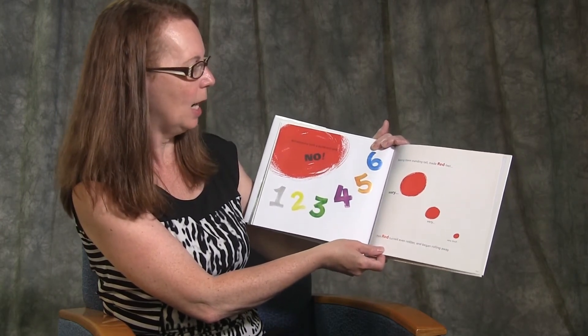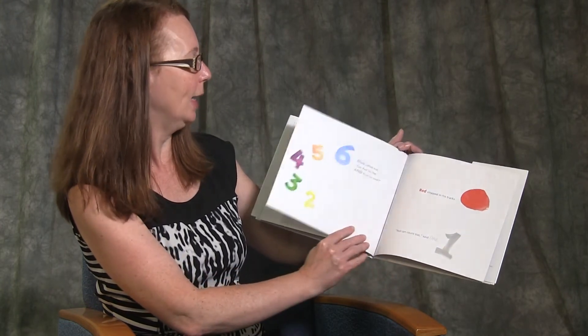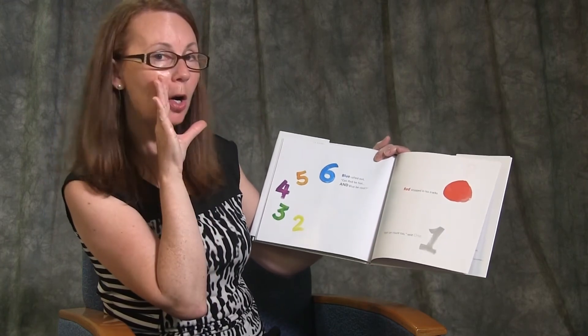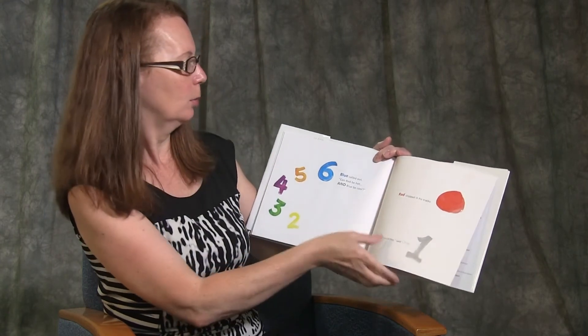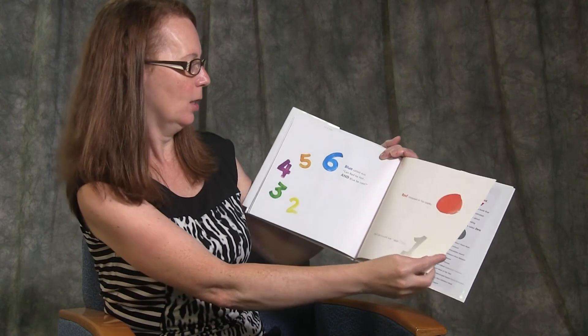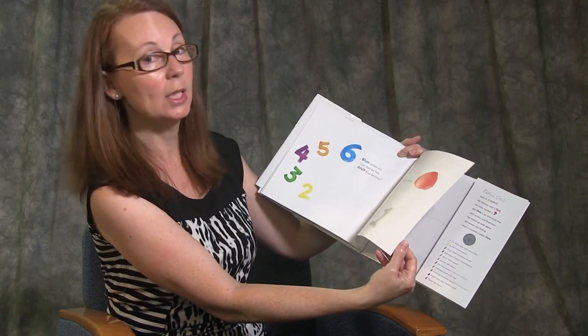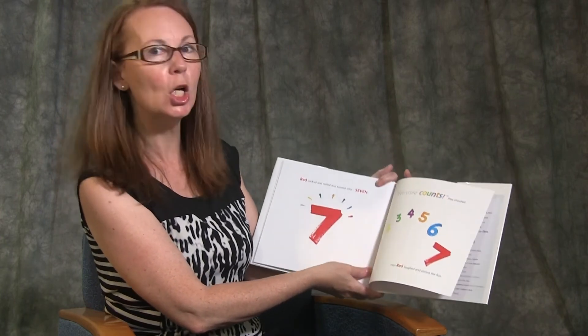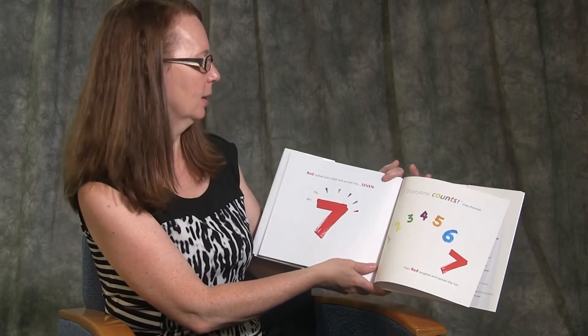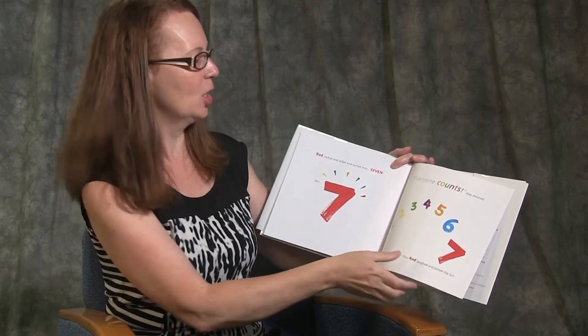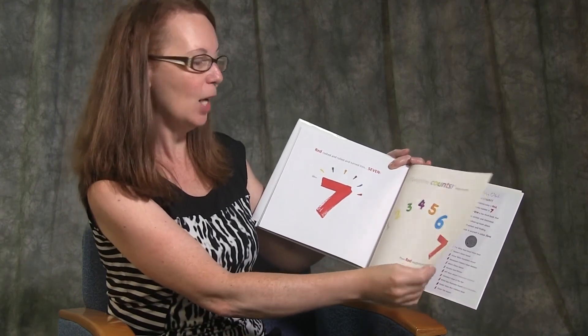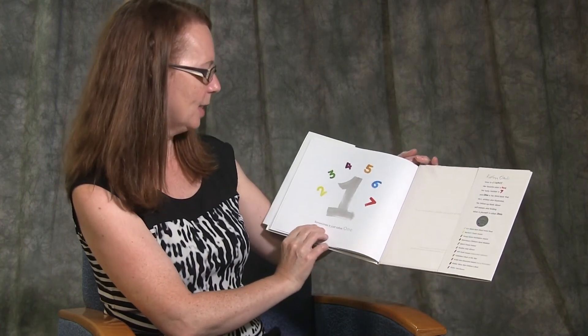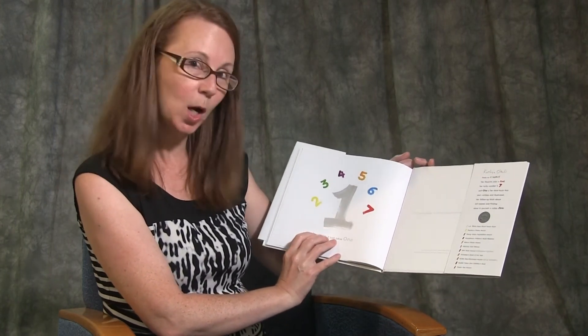Then red turned even redder and began rolling away. Blue called out, Can red be hot and blue be cool? Red stopped in his tracks. Red can count too, said one. Red rocked and rolled and turned into seven. Everyone counts, they shouted. Then red laughed and joined the fun. Sometimes it just takes one.